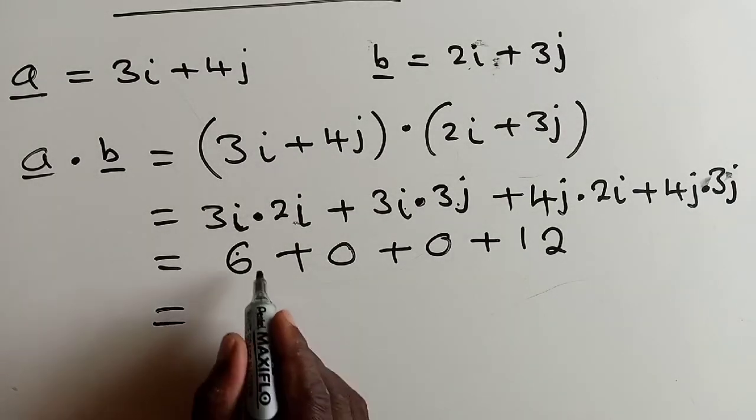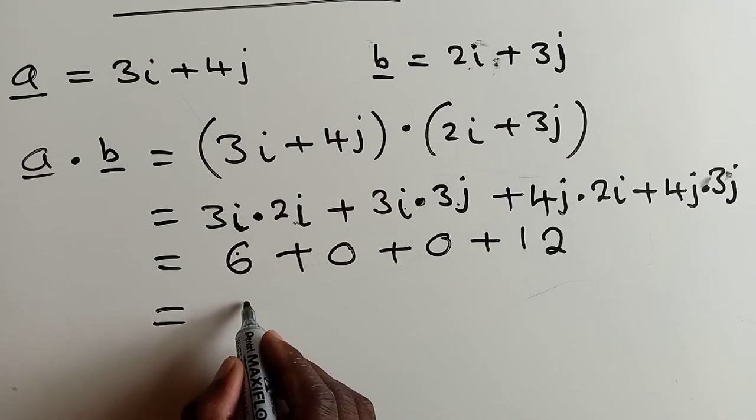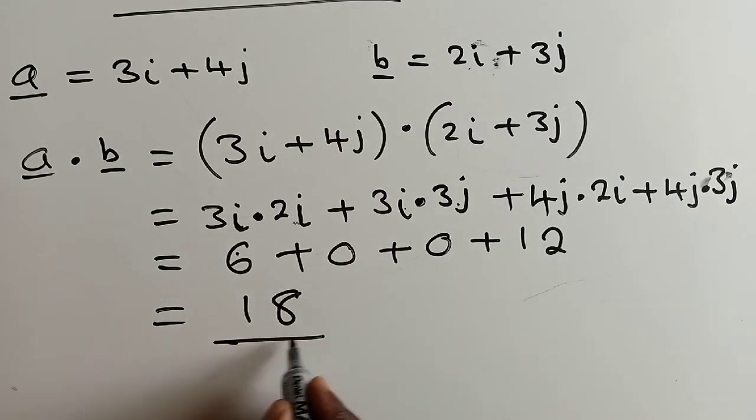Next thing here will be to now work out where our final answer will just be 18. So this is how you find a dot product.